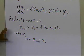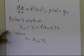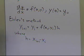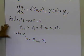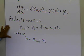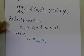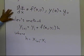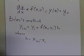Euler's method is not an accurate method, so we need to find a better, more accurate method. That's what Runge and Kutta did with the Runge-Kutta second-order method — to get a more accurate way of solving a first-order ordinary differential equation of this form.